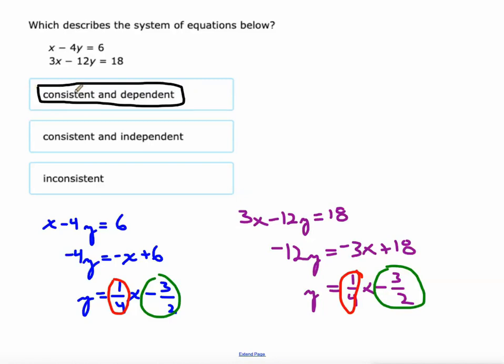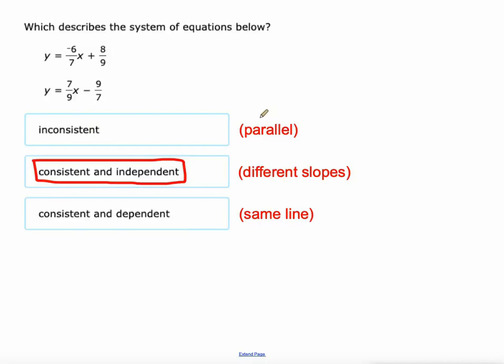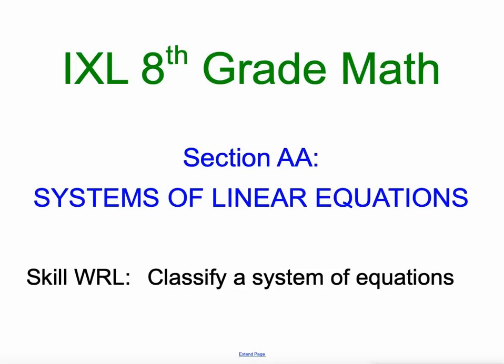In summary: inconsistent means parallel lines — same slope but different y-intercept. Consistent and independent means different lines with different slopes that cross one time and have one solution. Consistent and dependent means they're the same line, identified by having the same slope and the same y-intercept. This should help you with classifying a system of equations, a skill in IXL's 8th grade math, section double A, systems of linear equations.